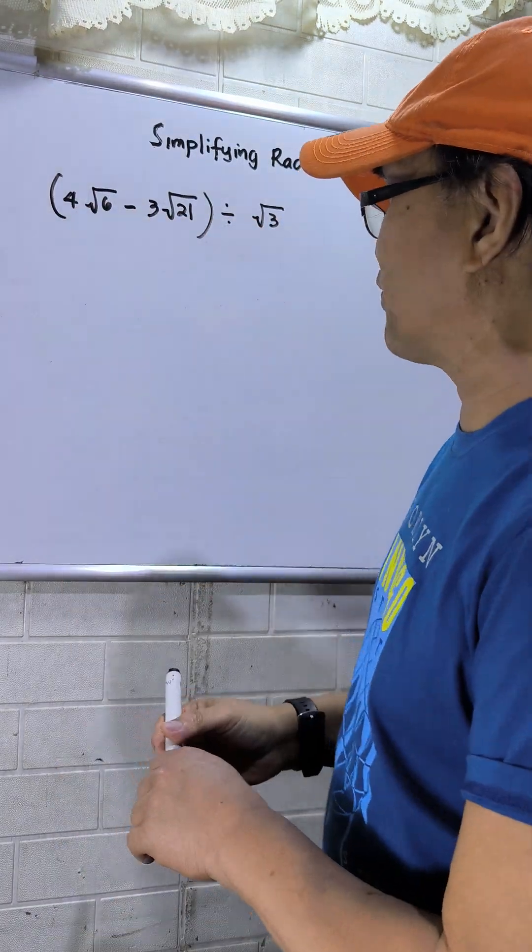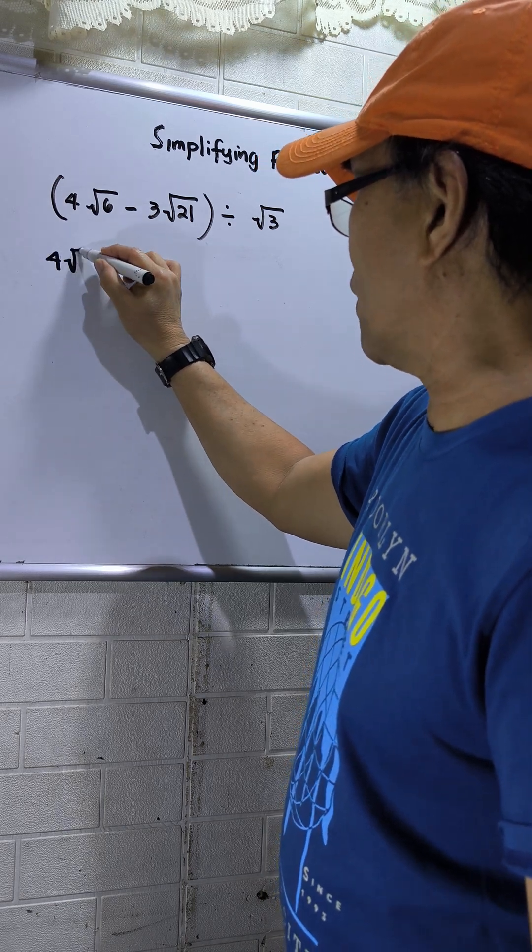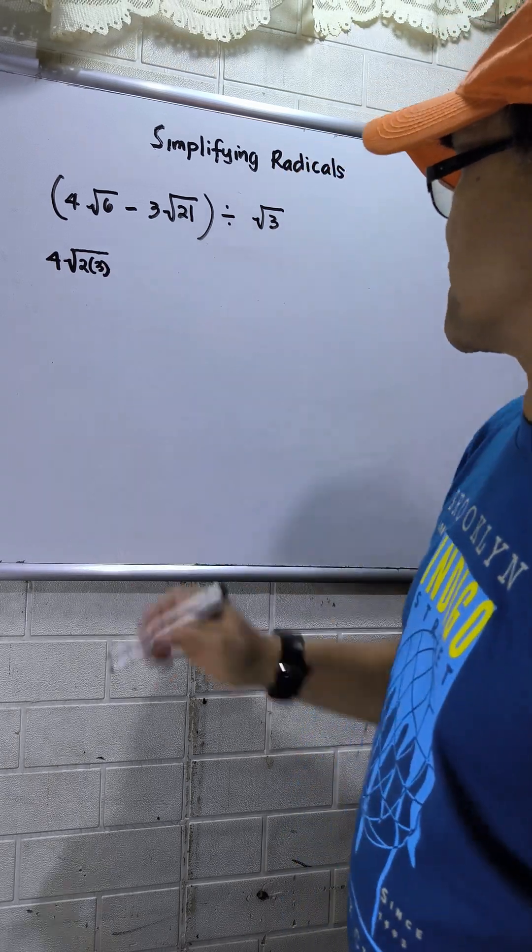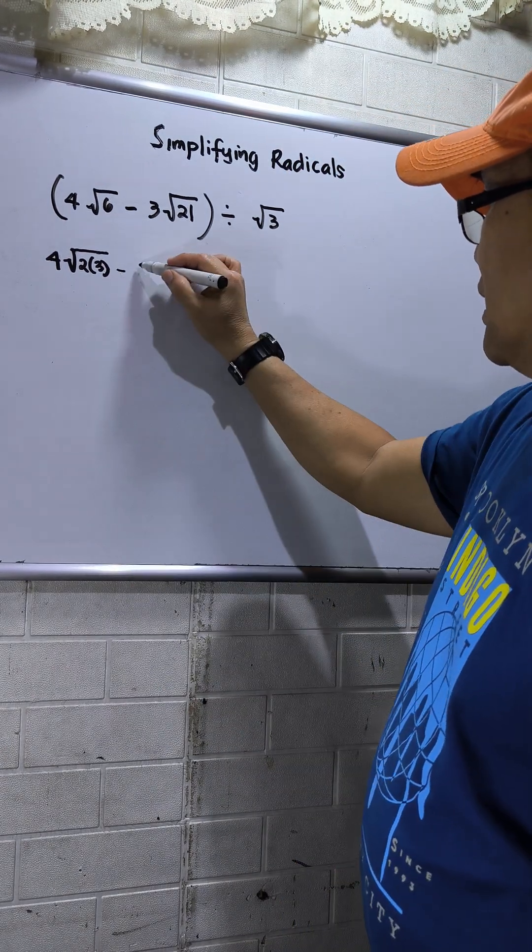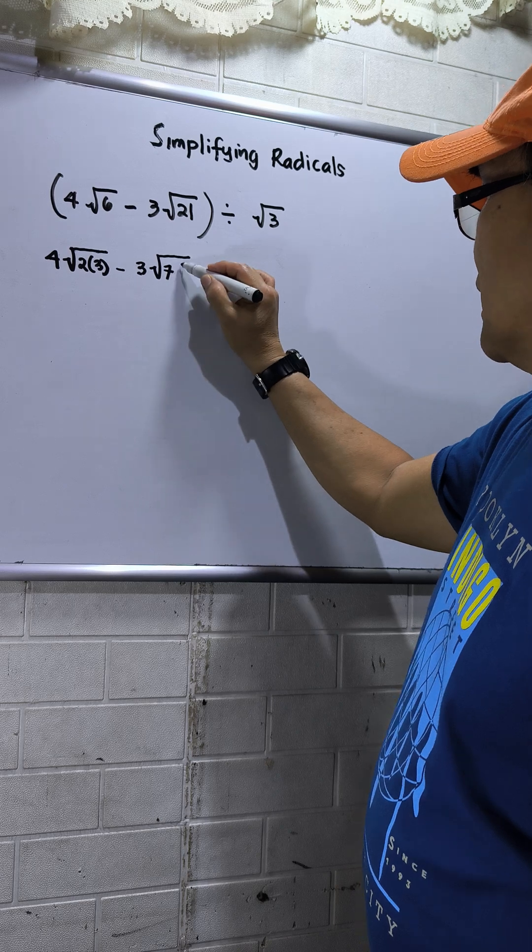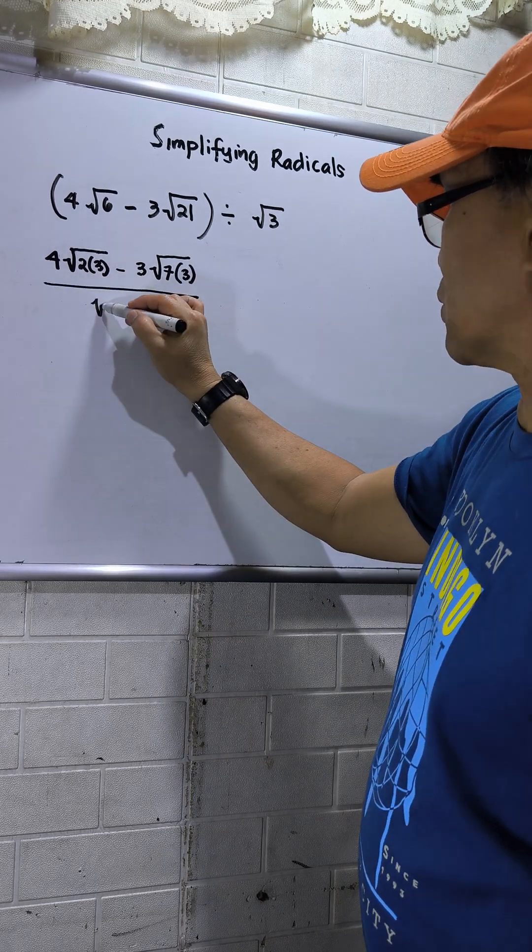So I will simplify square root of 6. This will be 4 square root of 2 times square root of 3. That equals 6. Then minus 3 square root of 7 times 3, divided by square root of 3.